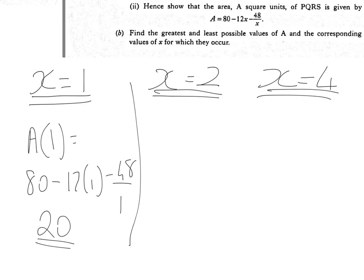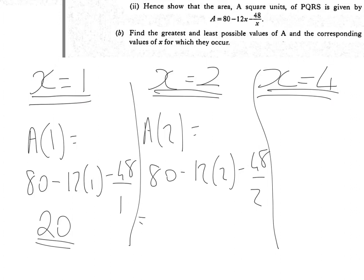I'm now going to investigate what happens at the turn point, x equals 2, so that's A of 2, is equal to 80 minus 12 lots of 2, minus 48 over 2. So, that's 80 take away 24, take away 24 again, and that's 80 take away 48, and that gives me an area of 32.